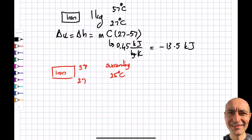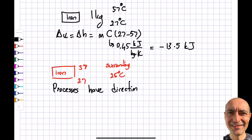The second law can be expressed in multiple ways, but one way is that processes have a direction. A hot cup of water cools down — it does not heat up on its own unless you supply energy to it. This concept of directionality is why the second law is important to cover.